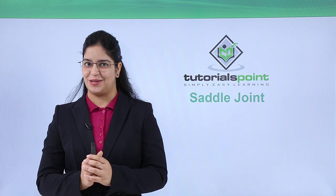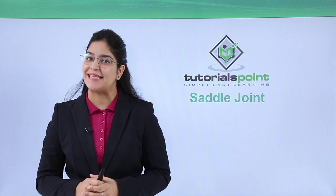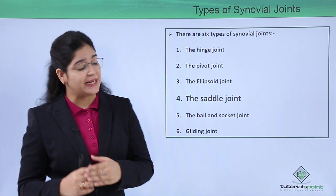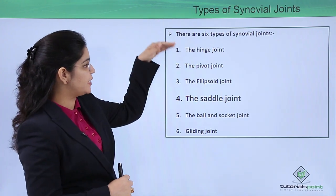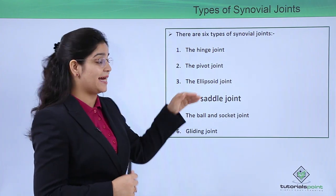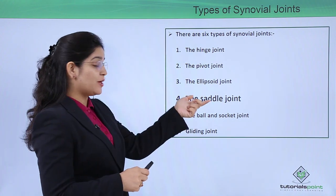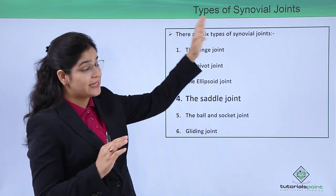Hi there, welcome back to Tutorials Point. Today we are going to learn about the fourth type of synovial joint, that is the saddle joint. We have already studied about the hinge joint, pivot joint, and ellipsoid joint. Now as we know, saddle joint is a part of a synovial joint.